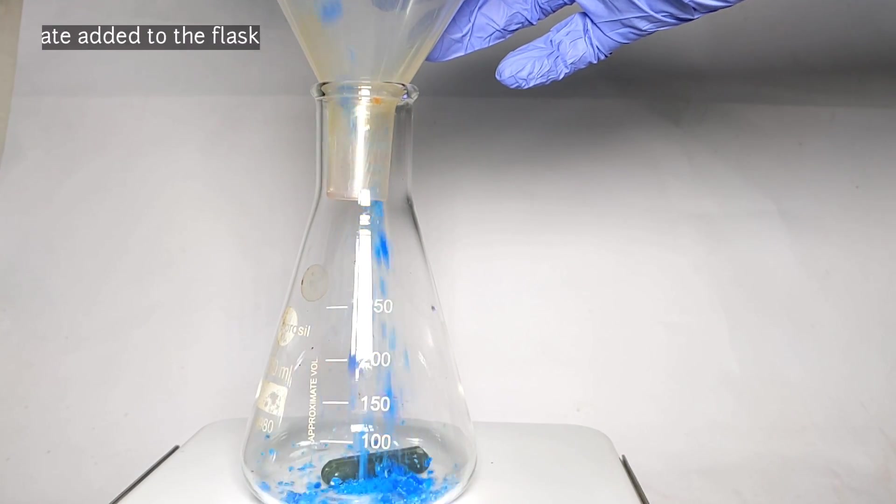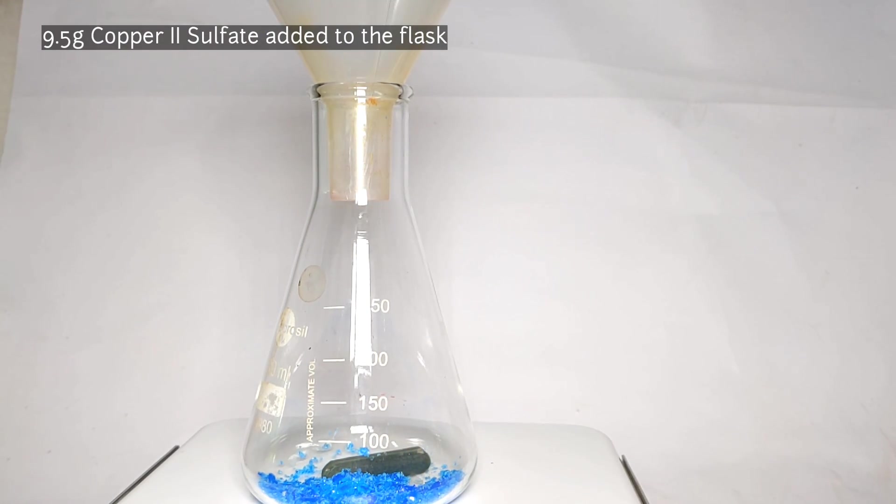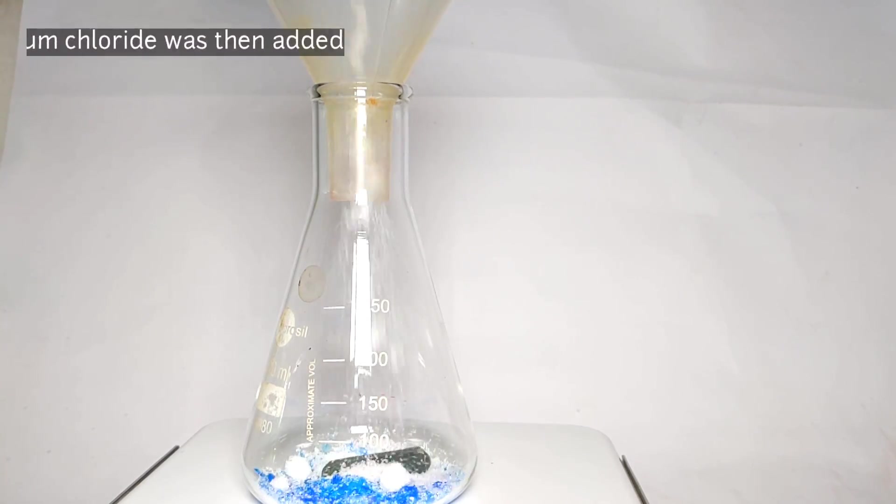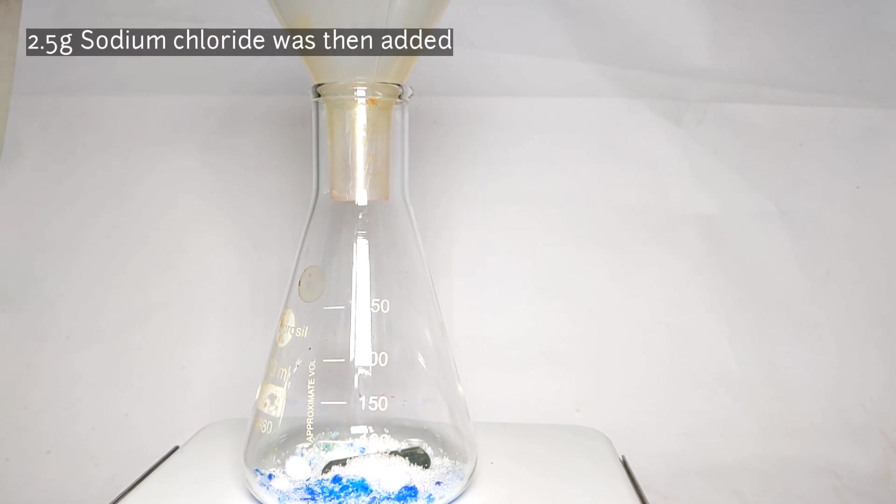With the help of a funnel, 9.5 grams of copper 2-sulfate pentahydrate was added to the flask, then 8.5 grams of sodium chloride was added on top of that.